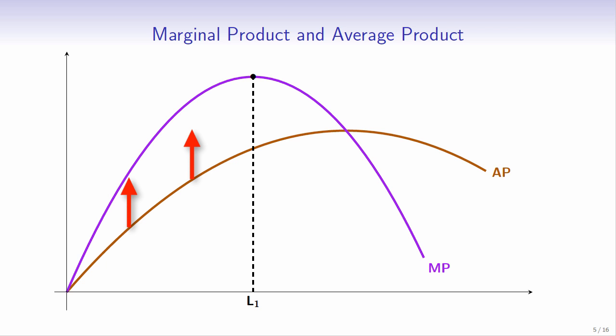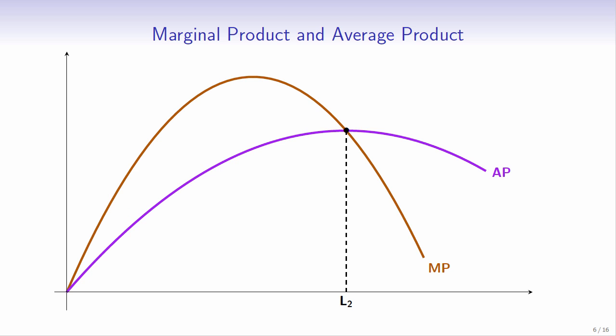Marginal product peaks at L1, but average product continues to increase as long as the marginal worker is more productive than the other workers on the team. Beyond L2, the last worker is less productive than the average worker, so the average product gets pulled down.